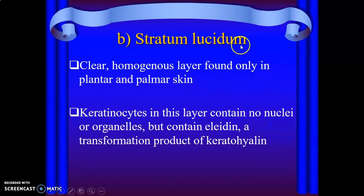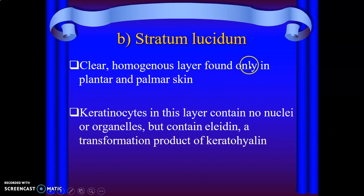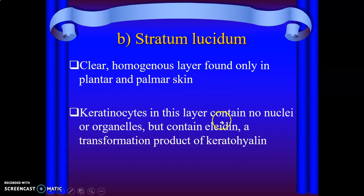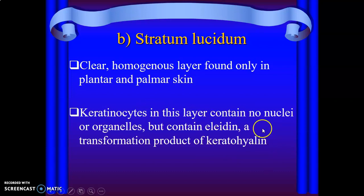'Good small gals like candy' — L is for stratum lucidum. It's a clear, homogenous layer only found in thick skin — the plantar and palmar skin. Keratinocytes in the lucidum layer have no nuclear organelles but they contain eleidin, which is a transformation product of keratohyalin.